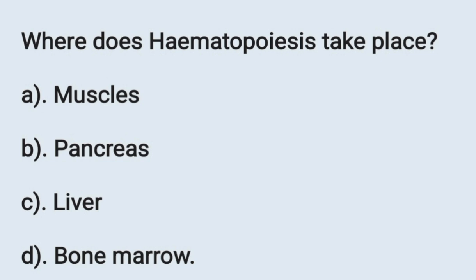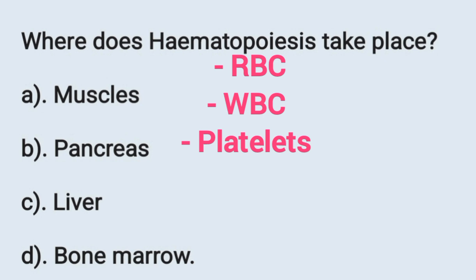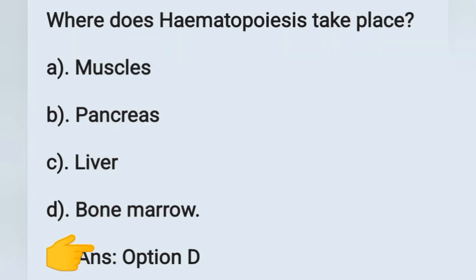Our first question: where does hematopoiesis take place? Options: (a) muscles, (b) pancreas, (c) liver, (d) bone marrow. Hematopoiesis means formation of RBC, WBC, and platelets, so its production occurs in bone marrow. Option D is the correct answer.